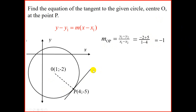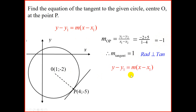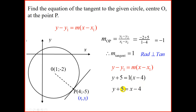Now, how does that help us find the gradient of the tangent? The gradient of the tangent is the negative inverse of negative 1, which is 1. The reason is that the radius is perpendicular to the tangent. Using the equation of a straight line with gradient 1 and point P at (4, −5) as x1, y1, we substitute: y minus minus 5 equals 1 times x minus 4. Simplifying: y plus 5 equals x minus 4, so y equals x minus 9, which is the equation of the tangent.